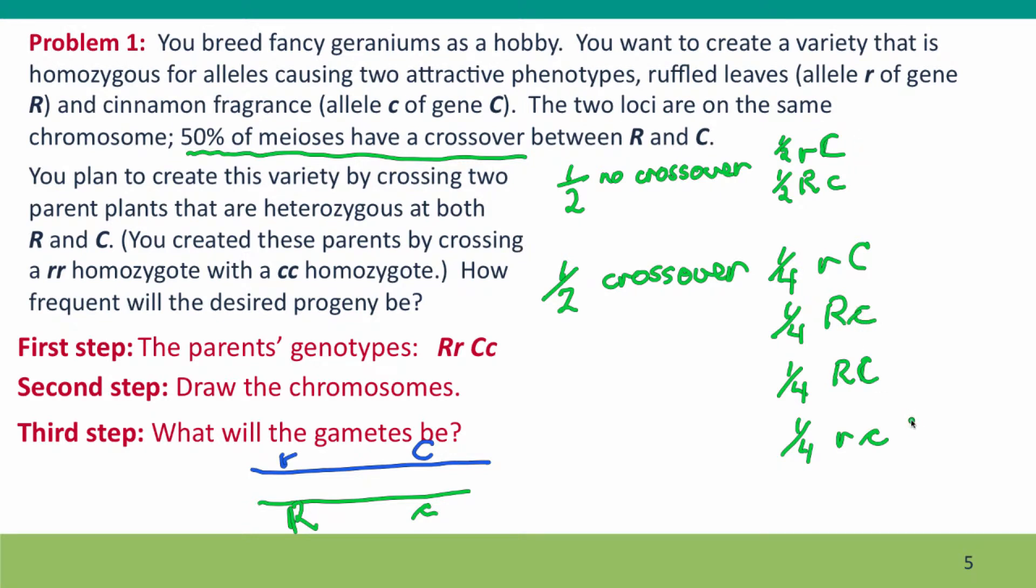Now we can put these numbers together to give us the final frequencies of the gametes. Half of the time, we've got these, which means in total, a quarter of all the gametes will be parental of this genotype from the no crossover meioses, and a quarter will be this parental genotype. Each of these are present in the half of the meioses that had crossovers, so they'll each be present at one-eighth of all of the gametes. These gametes are unique to the crossover class, so that's the final frequency of those gametes. But here we can combine these gametes together. We're going to have three-eighths of this parental type and three-eighths of this parental type.